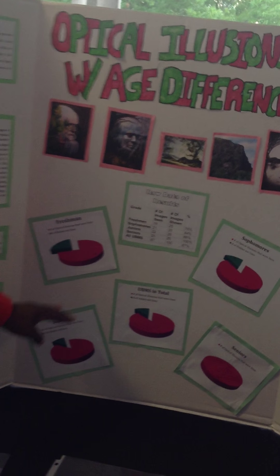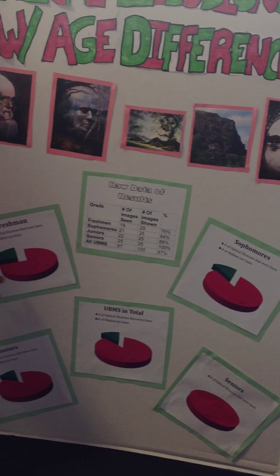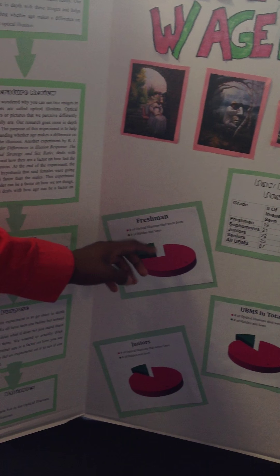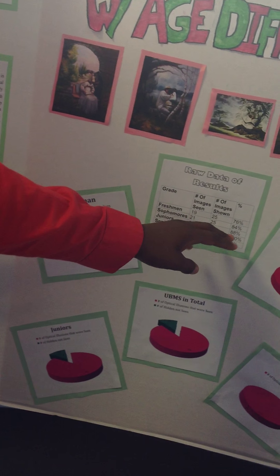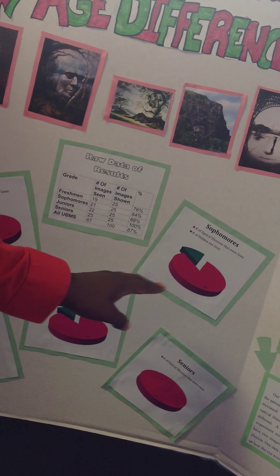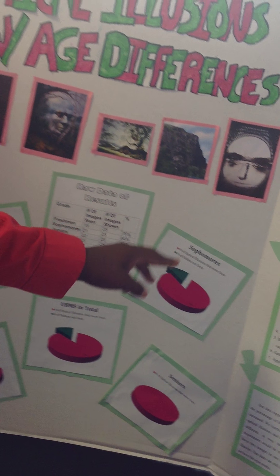In our chart, you can see that 15 out of 25 freshmen — meaning 84% of them — did not see the image, and 16% of them did. For the sophomores, 21 out of 25, meaning 84% of them did not see the image, and 16% of them did.